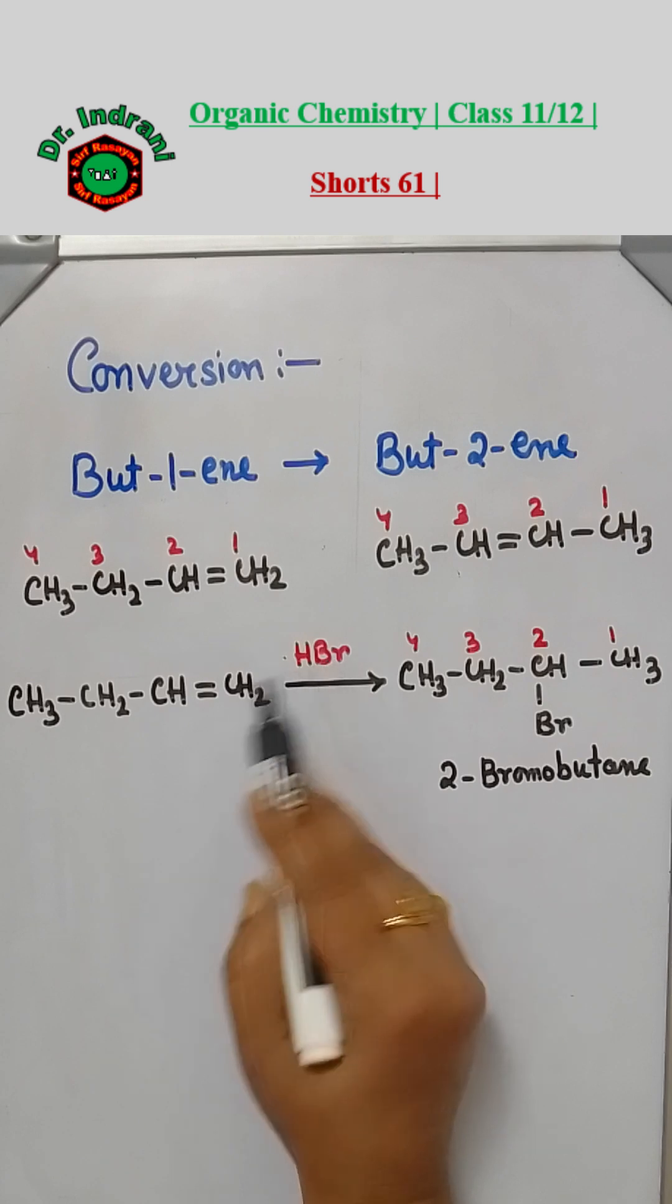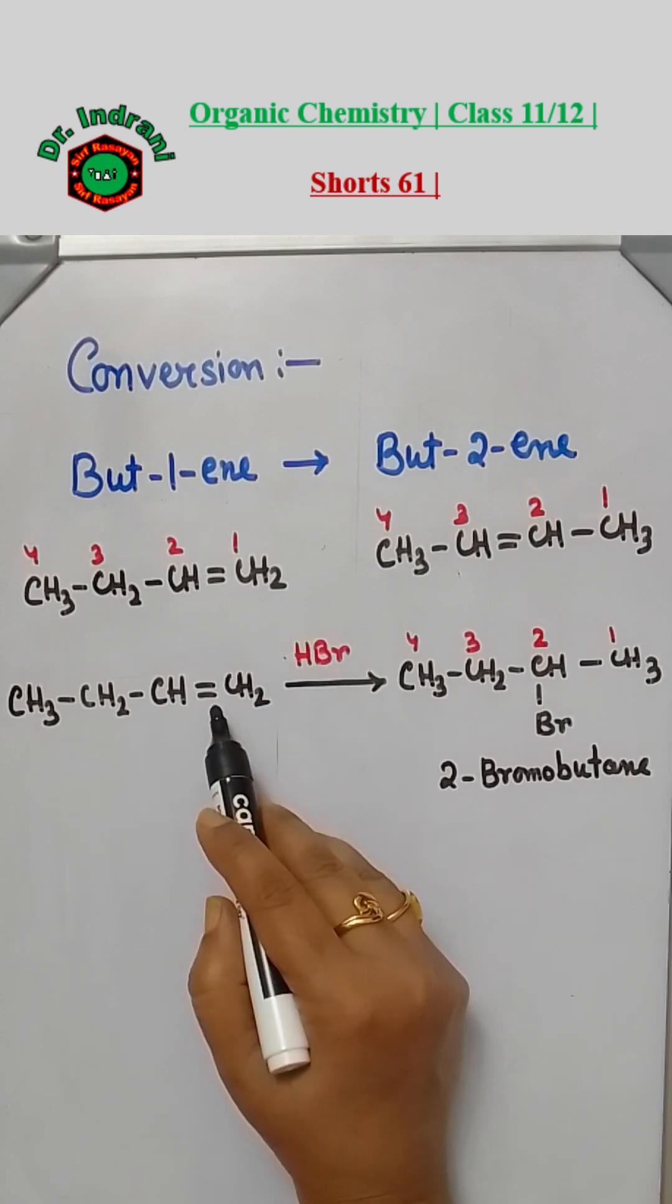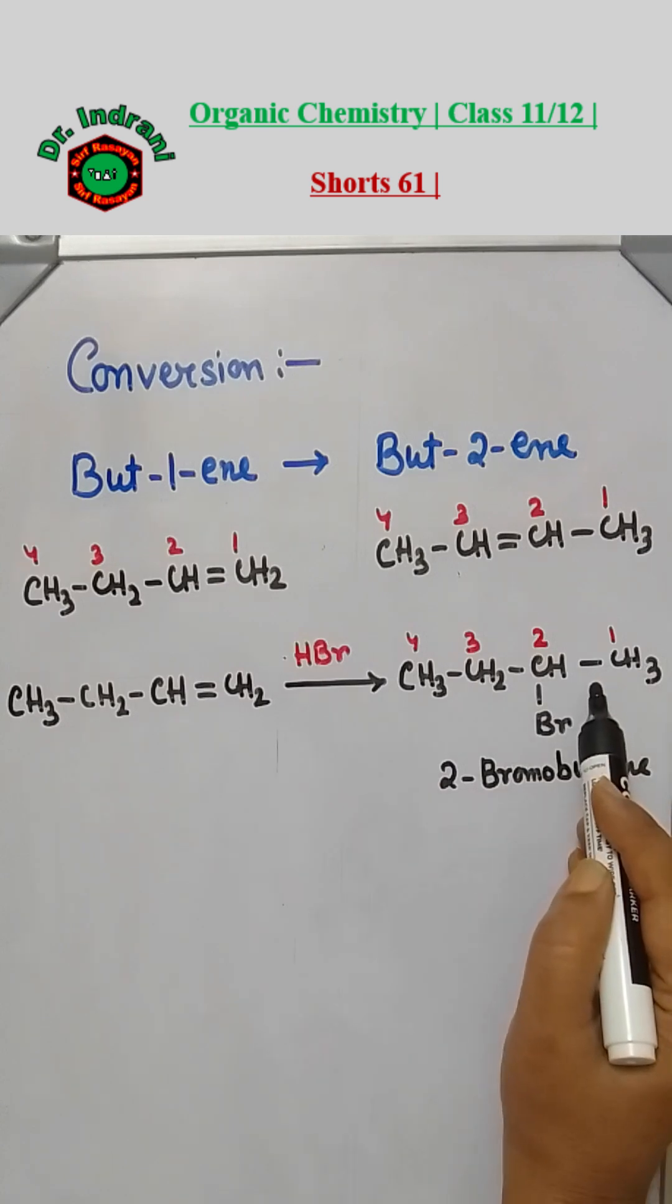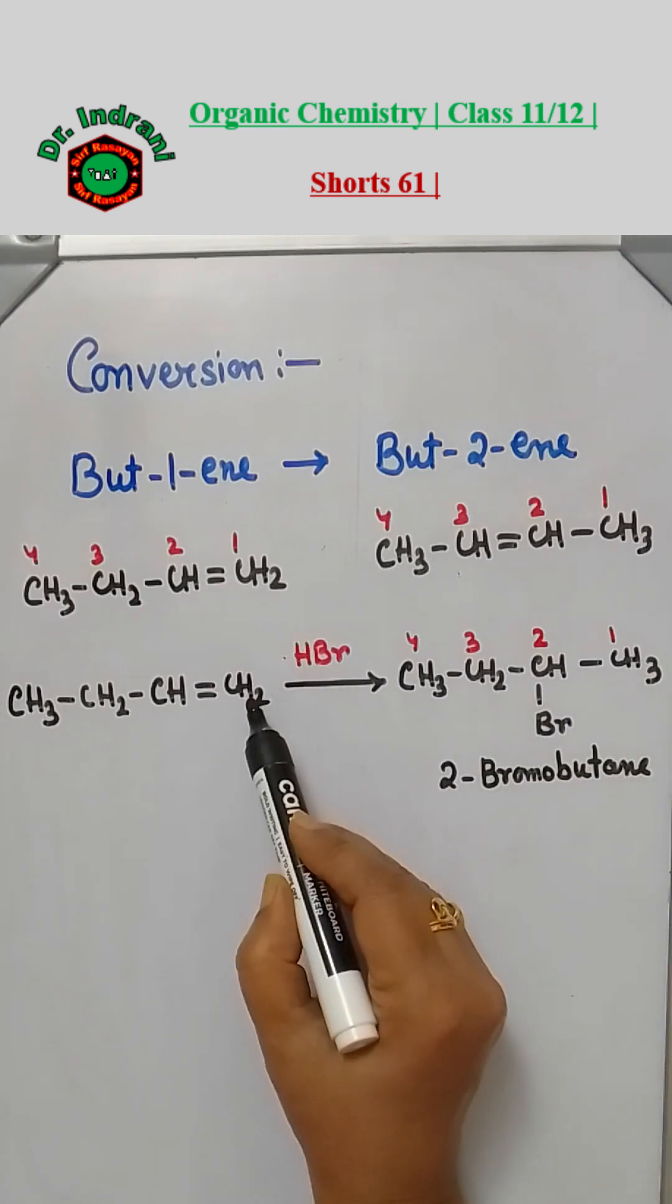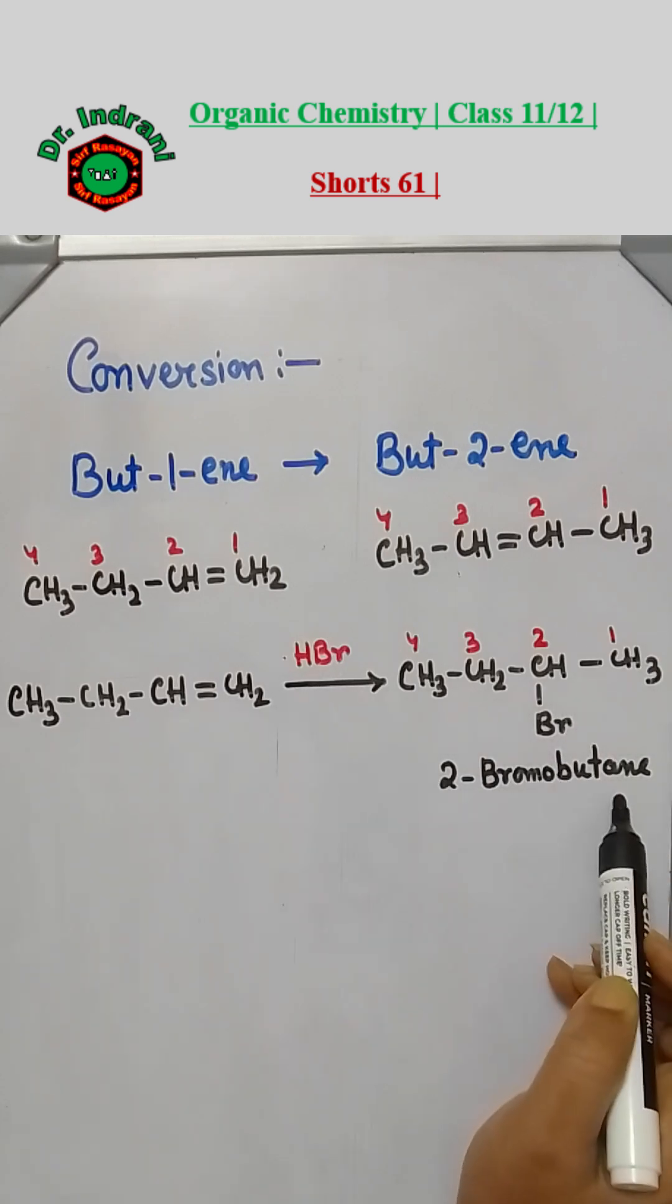Hydrogen will go here and Br will go here. Since addition is taking place in the double bond, in the product the double bond doesn't need to be written. So if hydrogen is coming here, you are getting CH3 and here bromine, so we are getting 2-bromobutane.